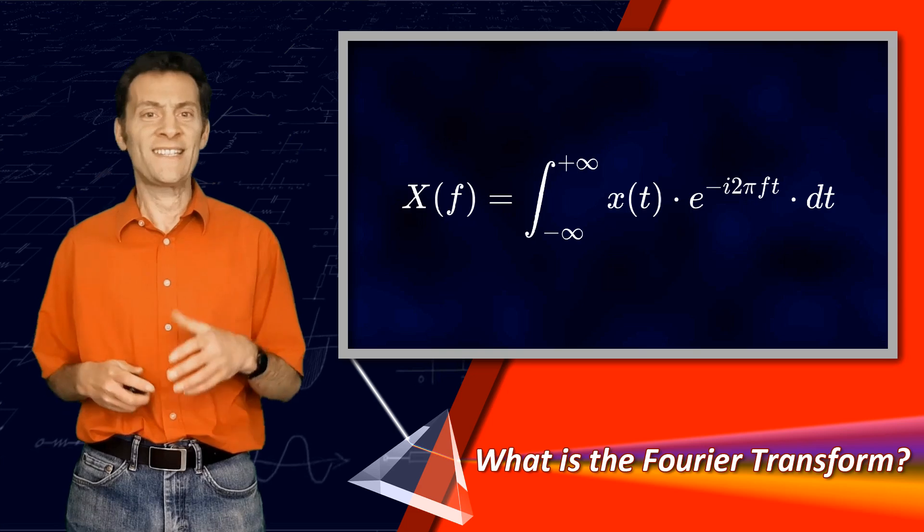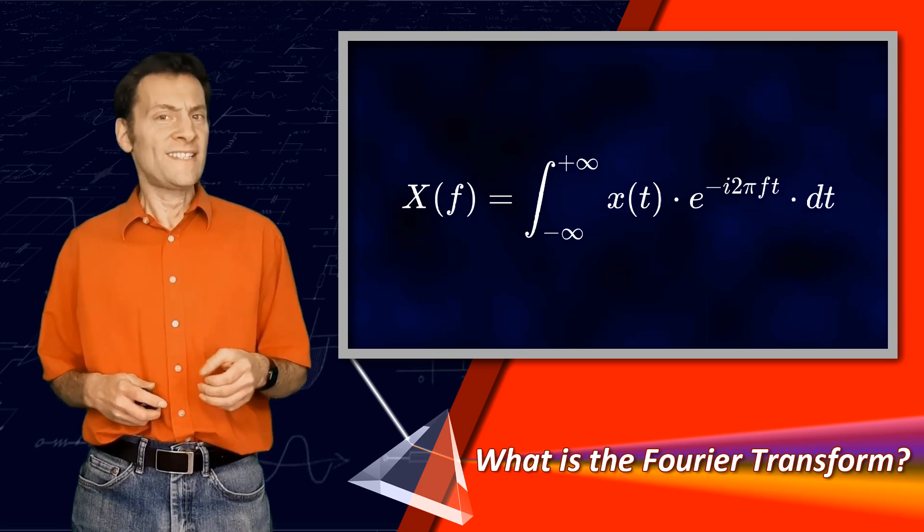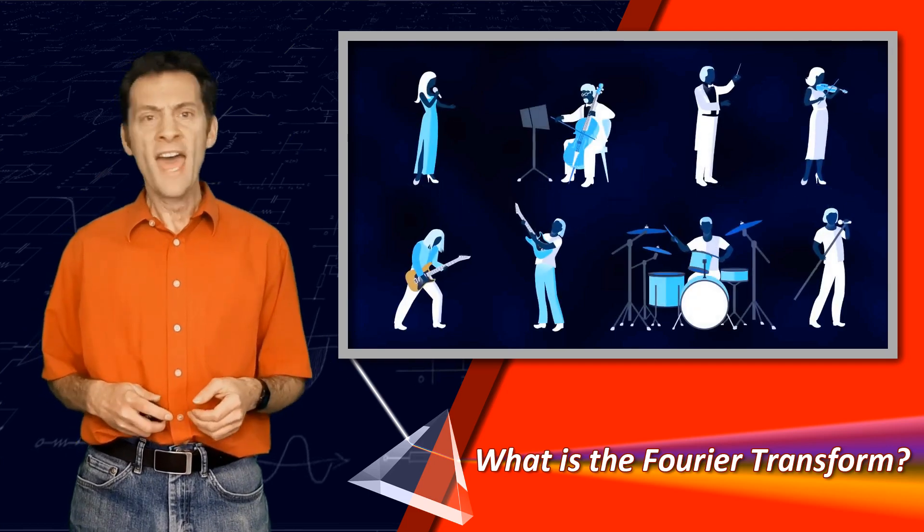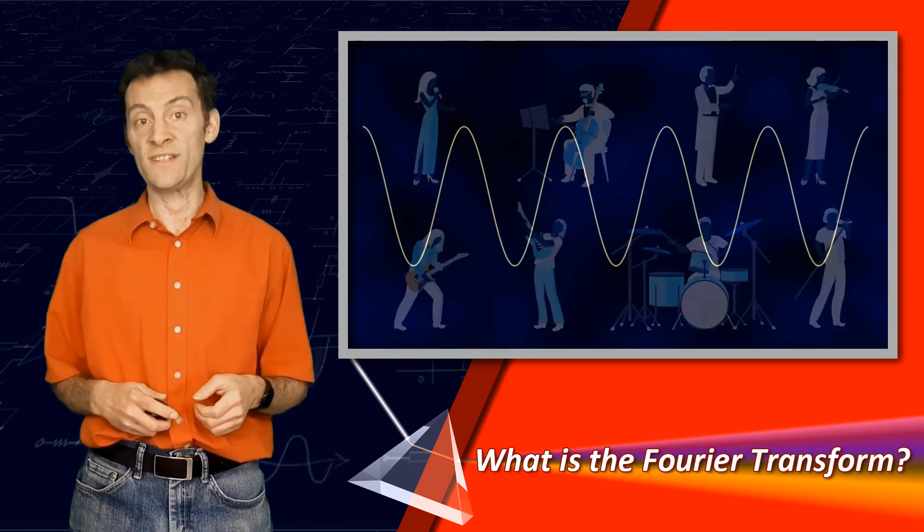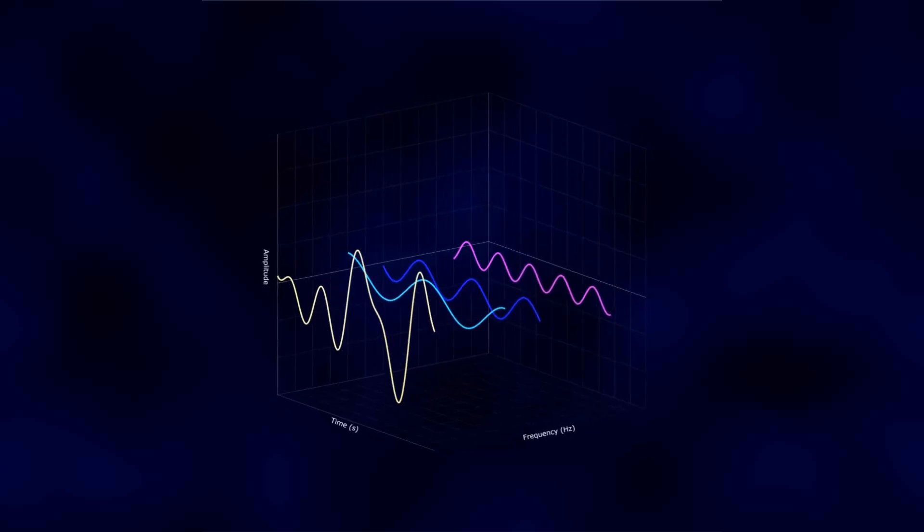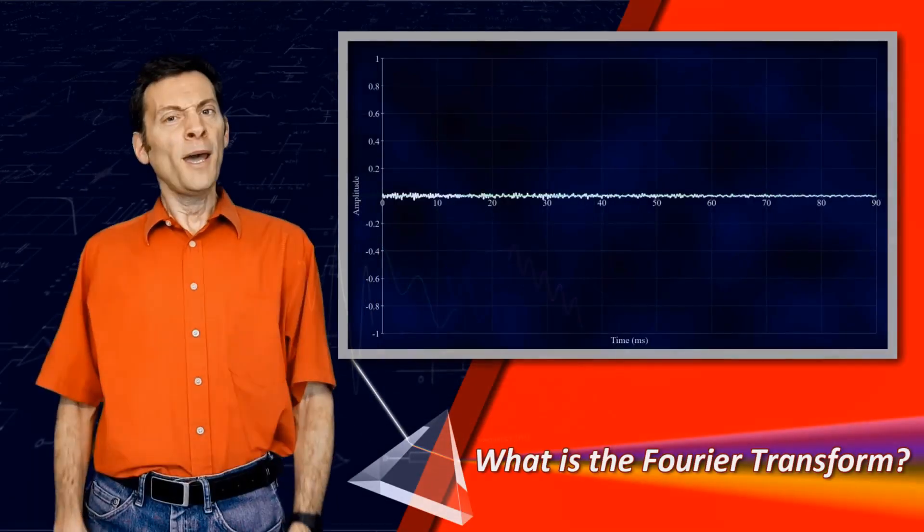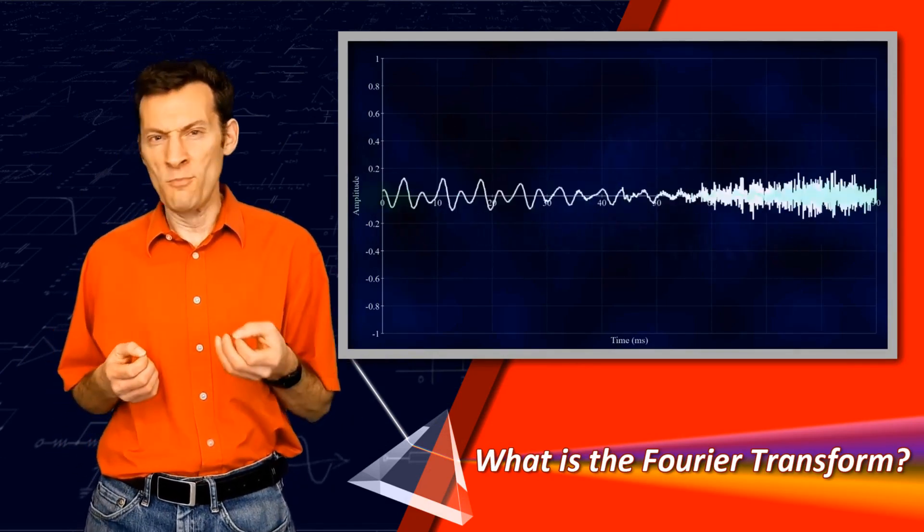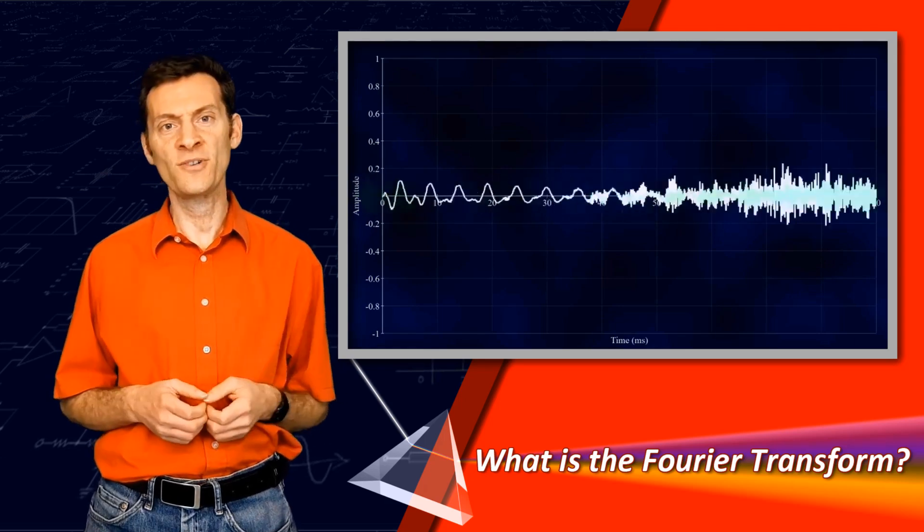The Fourier transform does exactly the same thing. But instead of signals being made up of complicated things like musical instruments, they're made up of simple sinusoids. And the Fourier transform knows what a sinusoid sounds like. But can a complicated signal like the sound of my voice really be built out of something so basic as a collection of sinusoids?